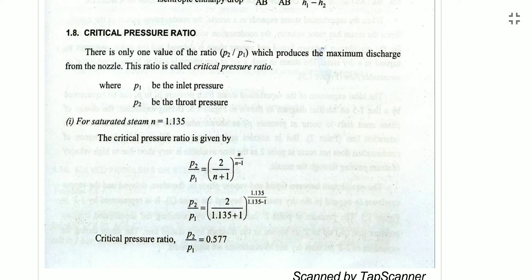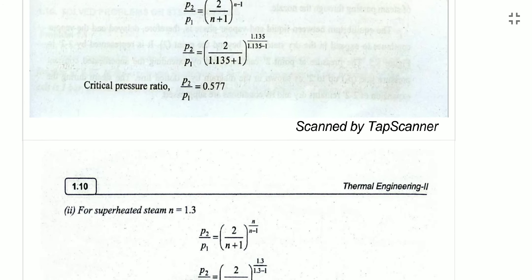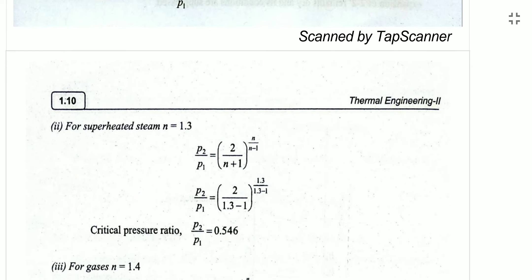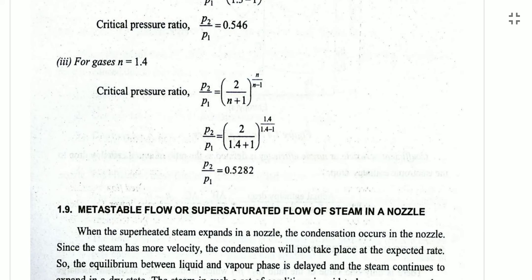The critical pressure ratio is the pressure ratio at which maximum discharge occurs in the nozzle. Using the formula P2/P1 = (2/(n+1))^(n/(n−1)) and substituting n = 1.135 for saturated steam, the critical pressure ratio is 0.577. For superheated steam with n = 1.3, the critical pressure ratio is 0.546. For gases with isentropic flow (n = γ = 1.4), the critical pressure ratio is 0.5282.